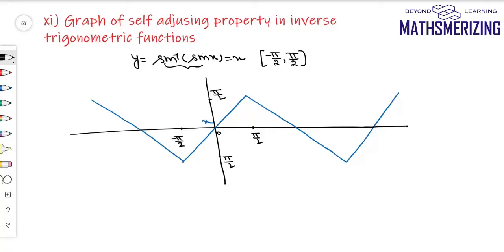Then I will draw the zigzag structures. I mark the points: π, 3π/2, 2π, −π, and −3π/2. Now I start writing the definitions. For the interval π/2 to 3π/2, the line makes an angle of 135 degrees, so it will be −x. It intersects the y-axis above the origin, so the definition is −x + π.